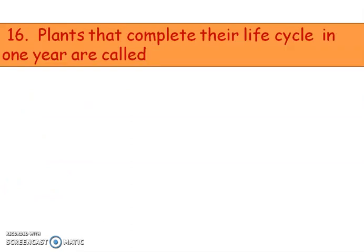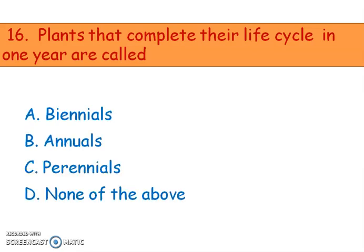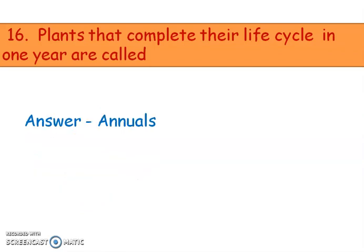Next question: plants that complete their life cycle in one year are called — options are biennials, annuals, perennials, or none of the above. The answer is annuals. Annuals complete their entire life cycle — germination, flowering, and fruiting — in one year. Biennials complete their life cycle in two years. Perennials live for more than three years.